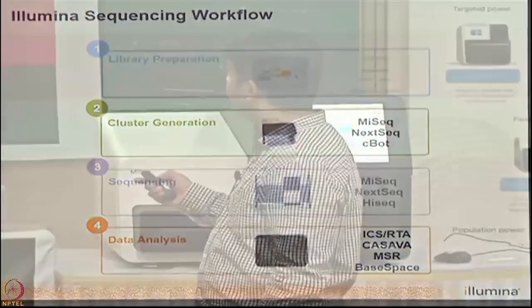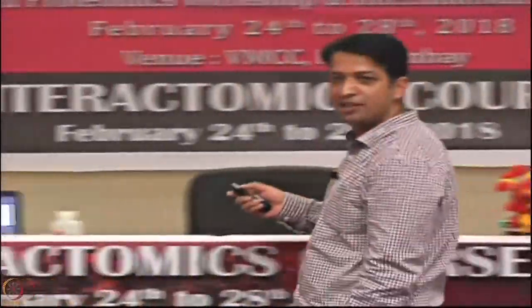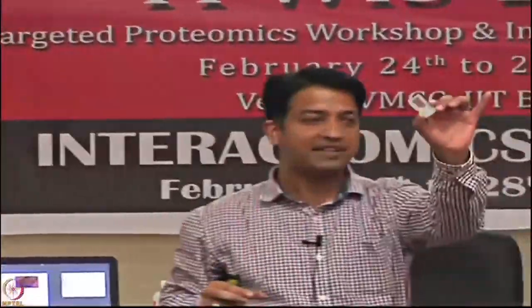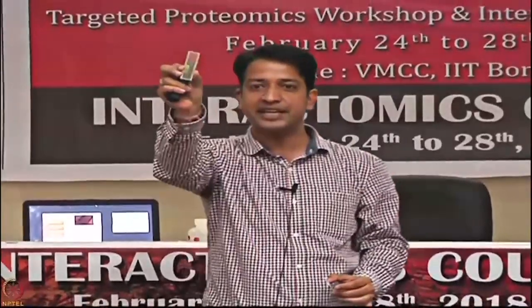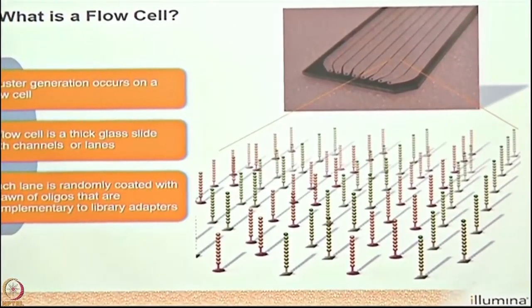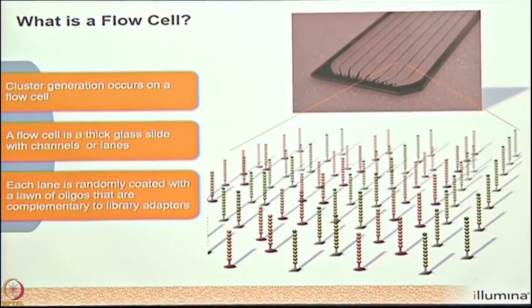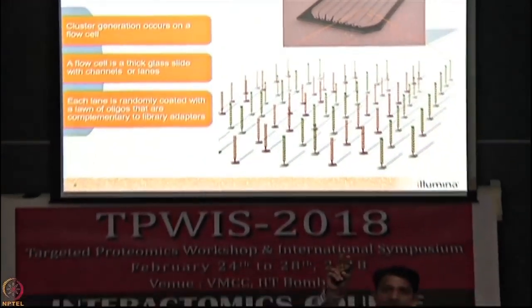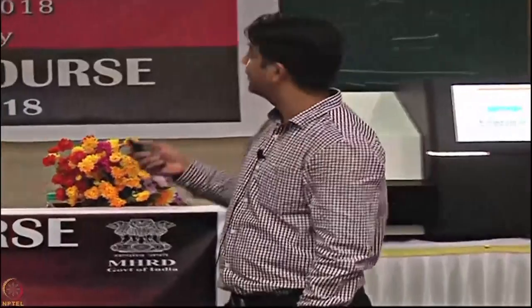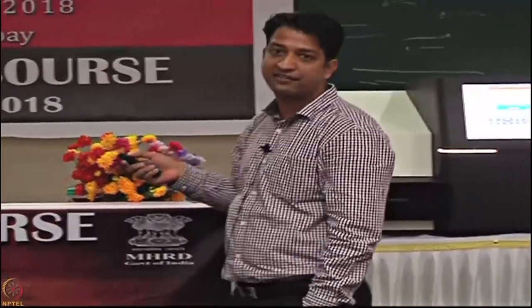Moving on to cluster generation — all this process happens on the flow cell, which is a glass slide. There is a HiSeq flow cell for whole genome sequencing and a MiSeq flow cell for targeted sequencing. The flow cell contains a lawn of oligonucleotides — one complementary to P5 and one to P7. Before loading, we denature the double-stranded DNA into single-stranded fragments so they can bind to the flow cell surface.